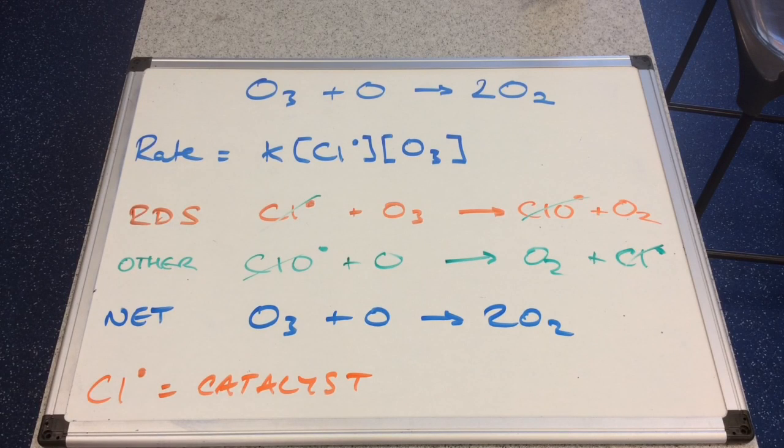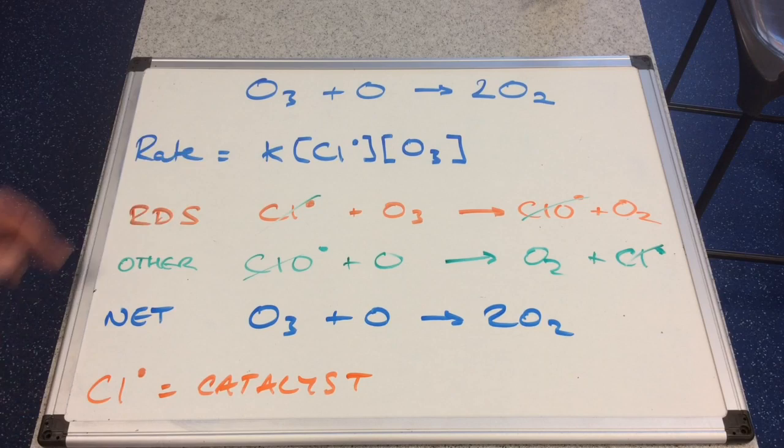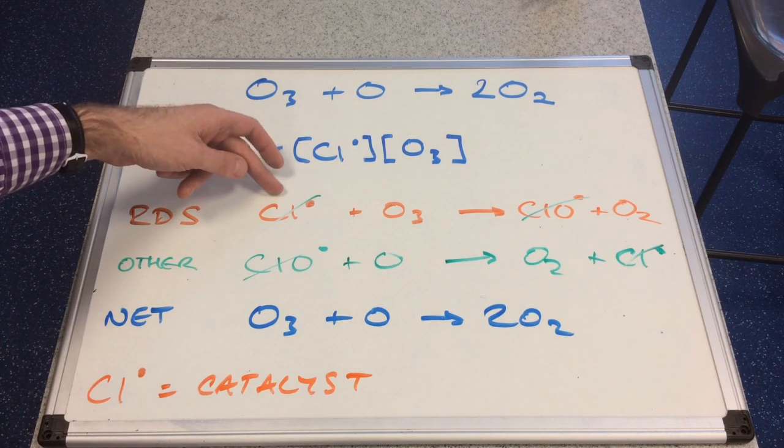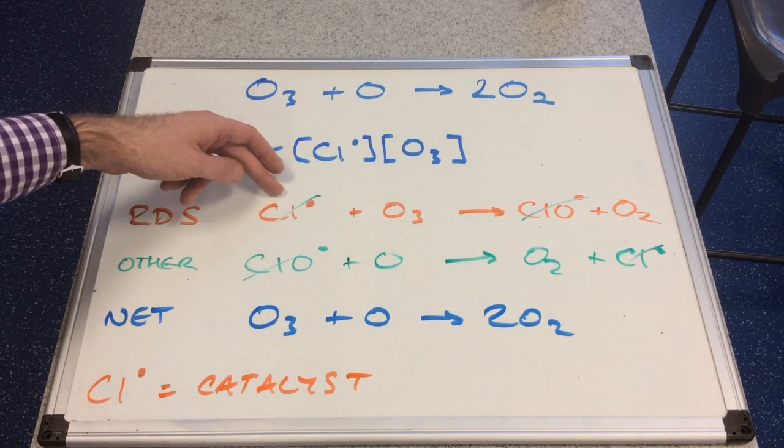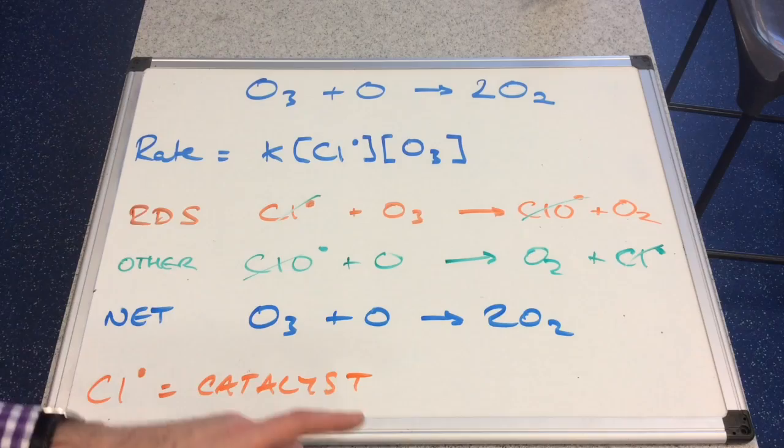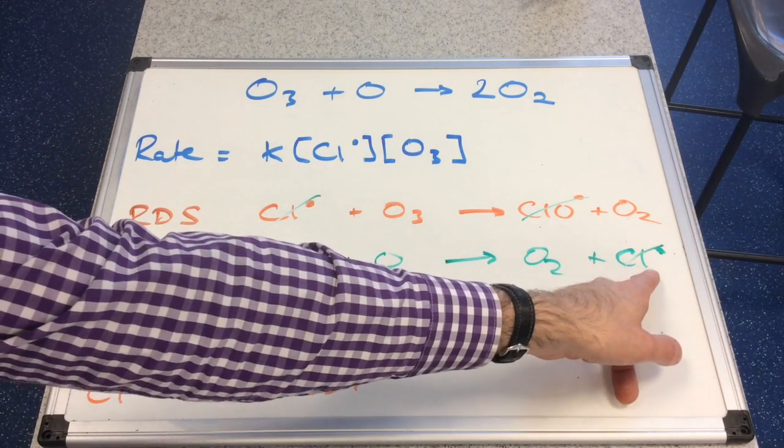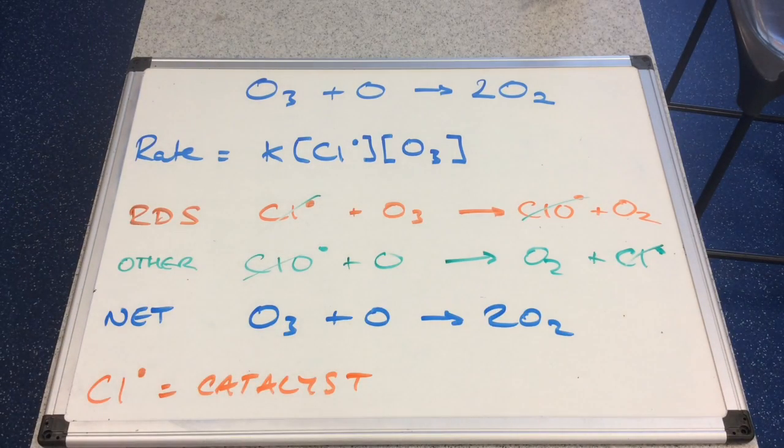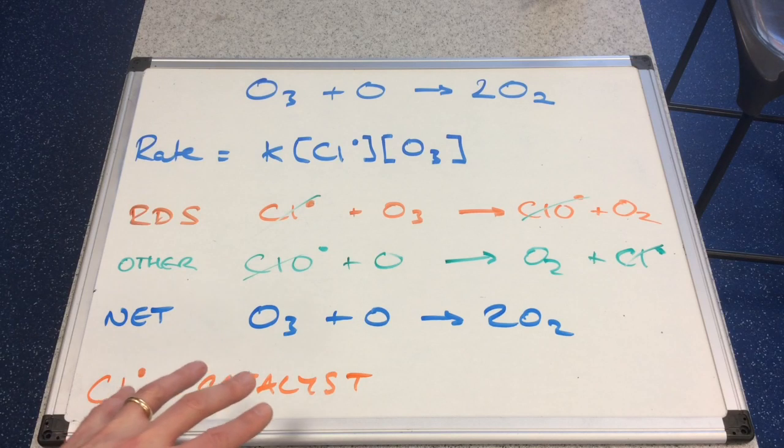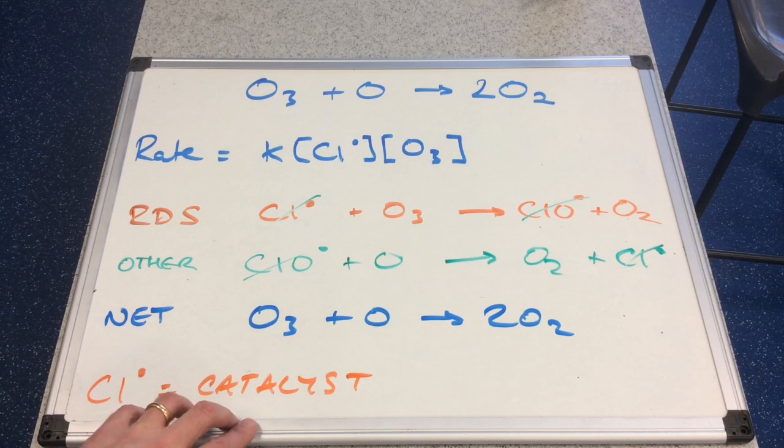You'll also notice, and they sometimes ask this, suggest the role of the chlorine radical. Well, you can see that it's used in the first step, the rate determinant step, but it's regenerated in the green step, the other step, and so it's effectively not being used up in the process, and so it's acting as a catalyst.